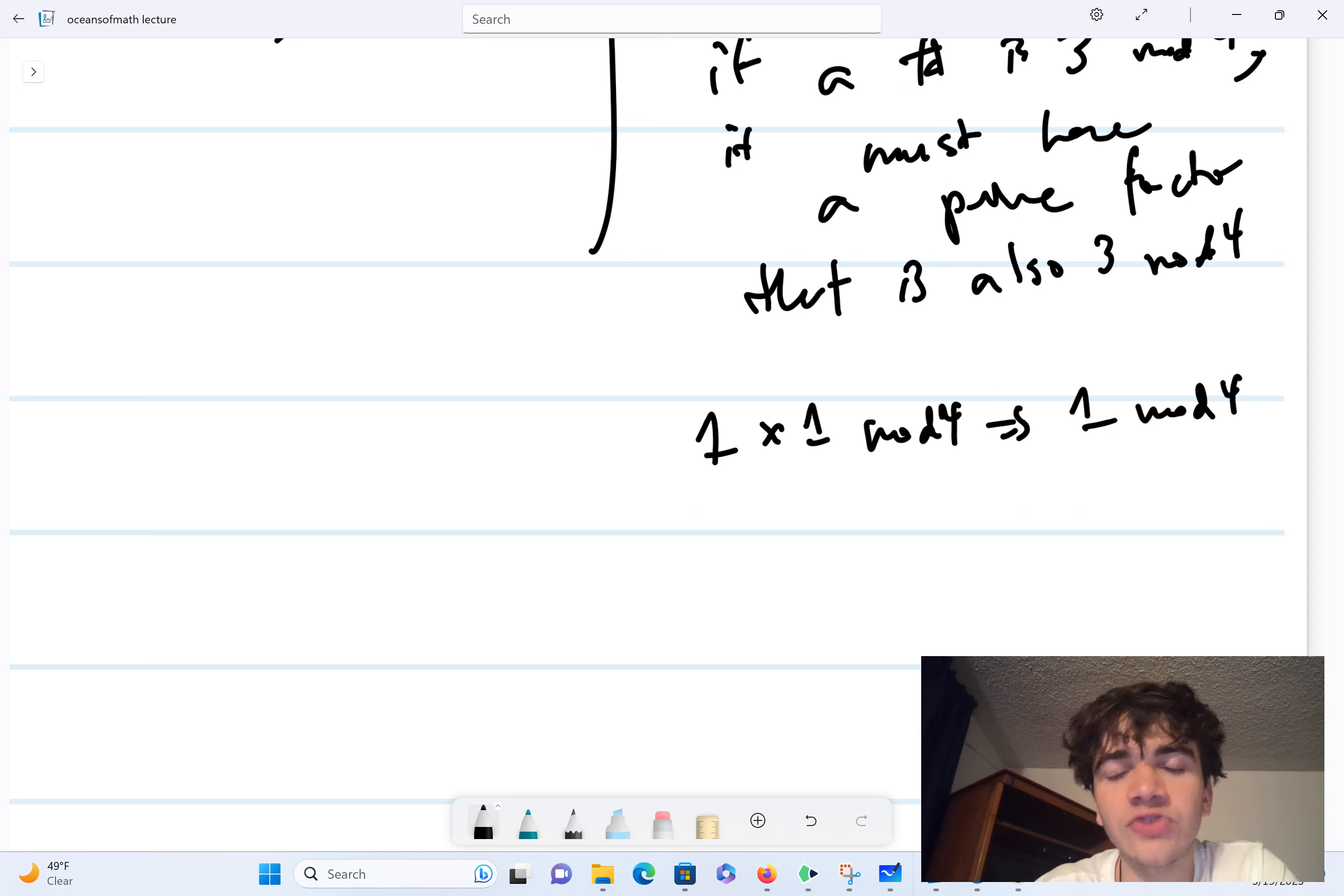And you can check that on your own. But basically, the rules of modular multiplication is you just multiply as you normally would, and then you reduce it modulo whatever the number is. So in this case, I multiply 1 by 1, I get 1, and that's already 1 mod 4.